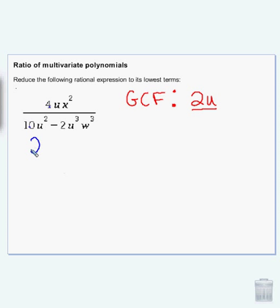What I'll then do is I will factor 2u out of each of the terms. If I take 2u from 4ux squared, I'm left with 2x squared. If I divide and take 2u from 10u squared, I'm left with 5u.